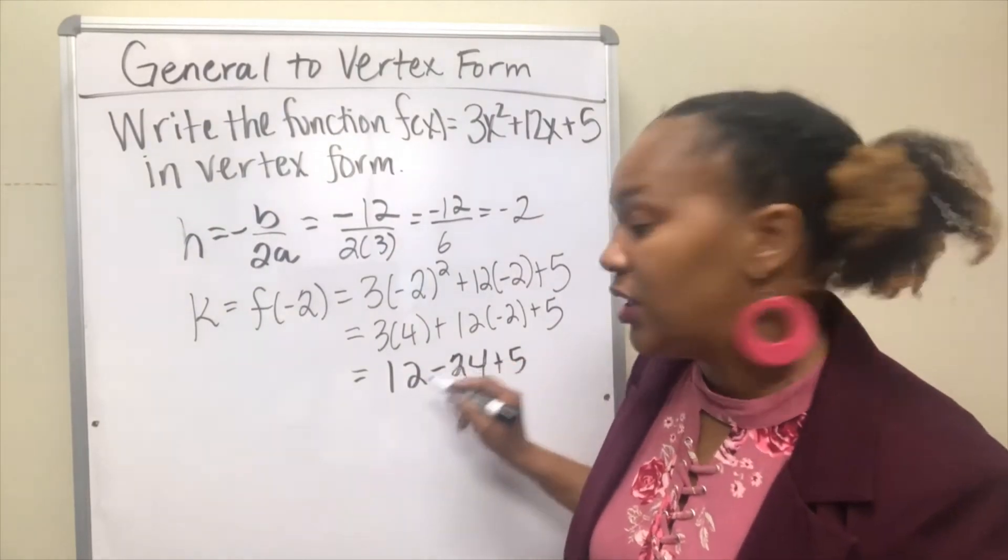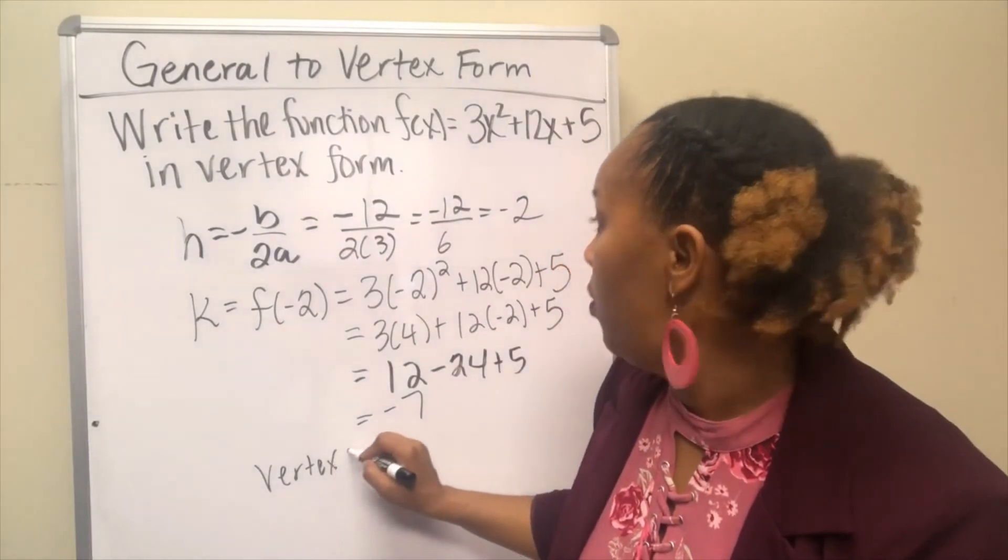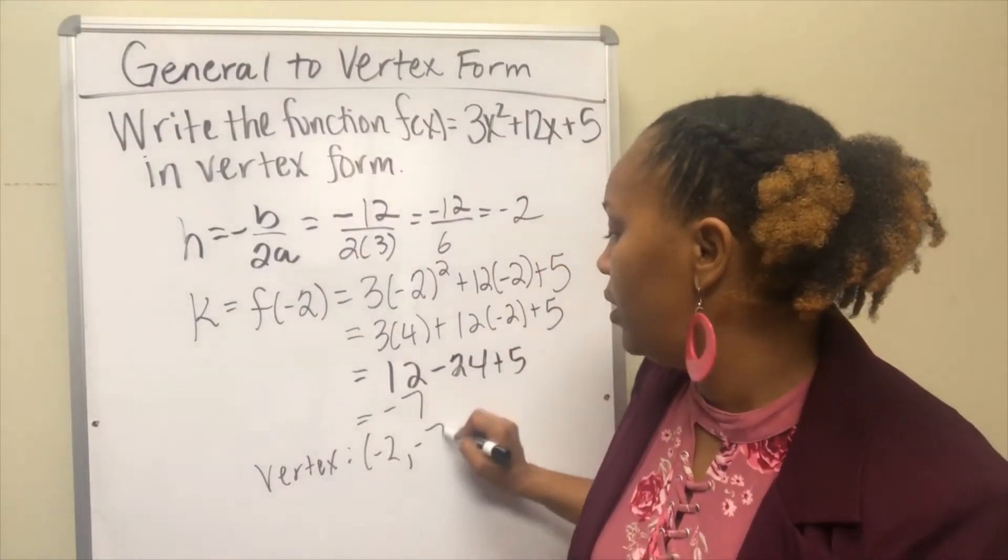So your vertex is the point negative 2, negative 7.